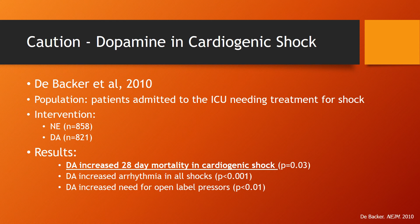Dopamine is not recommended in cardiogenic shock due to results from the DeBacker trial, published in 2010. This trial examined ICU patients needing treatment for shock, randomized to receive either norepinephrine or dopamine. The findings showed increased 28-day mortality in cardiogenic shock patients who received dopamine, increased arrhythmias across all shock types, and an increased need for open-label pressors in the dopamine group. Therefore, dopamine is not recommended in cardiogenic shock.